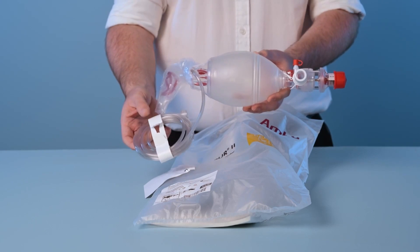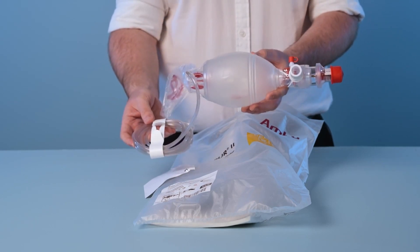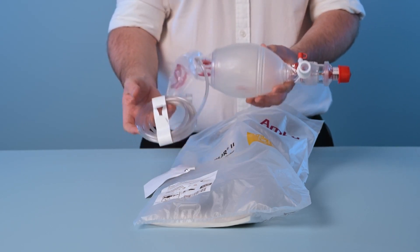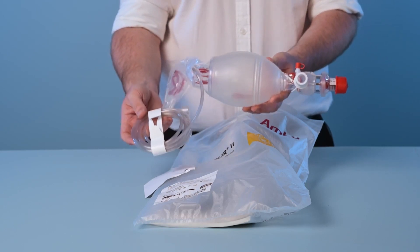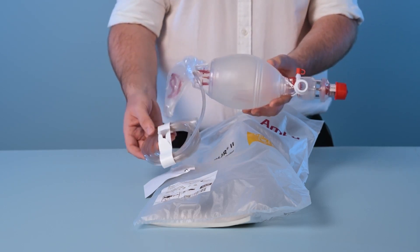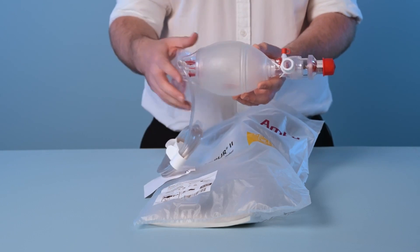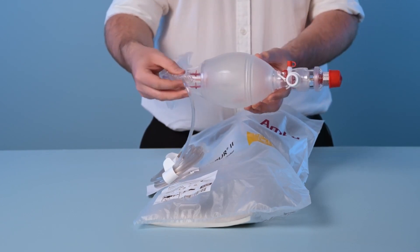Some Spur2 products come packaged in a compressed state and if this is the case simply pull on the patient valve to unfold the device. For the adult size pull both the patient valve connector and the end of the product.